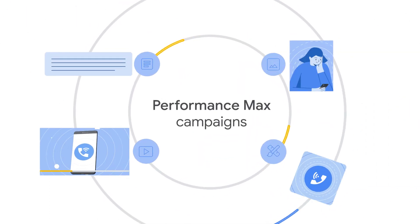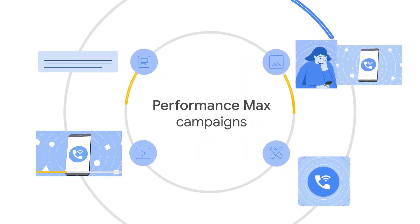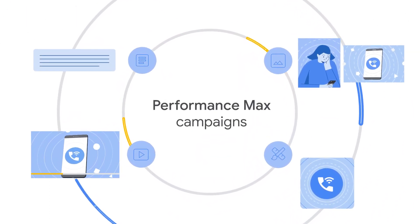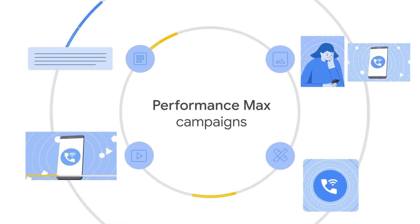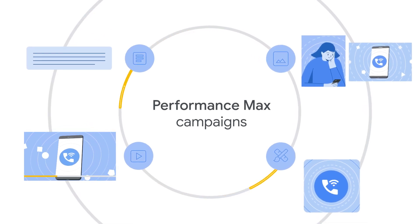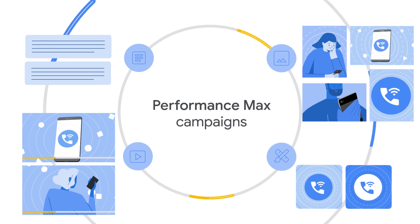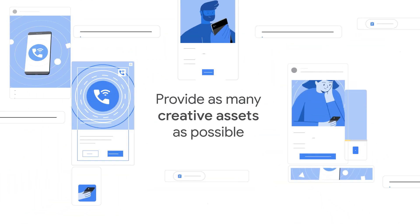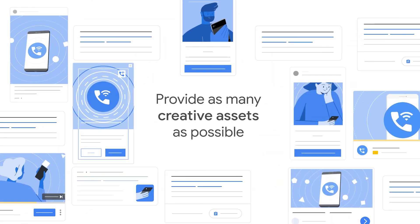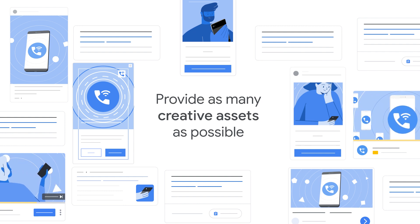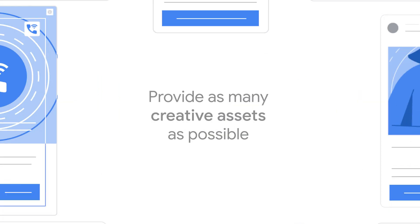Performance Max automatically assembles assets into all the available ad formats that are relevant to your conversion goals. When you provide more assets, this helps the campaign build a wider range of ad formats and show more compelling creative to users. This also allows you to appear on more inventory to drive more conversions or value.